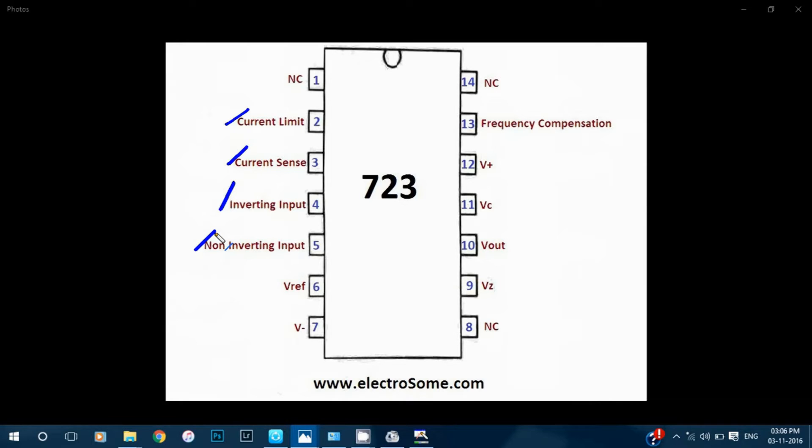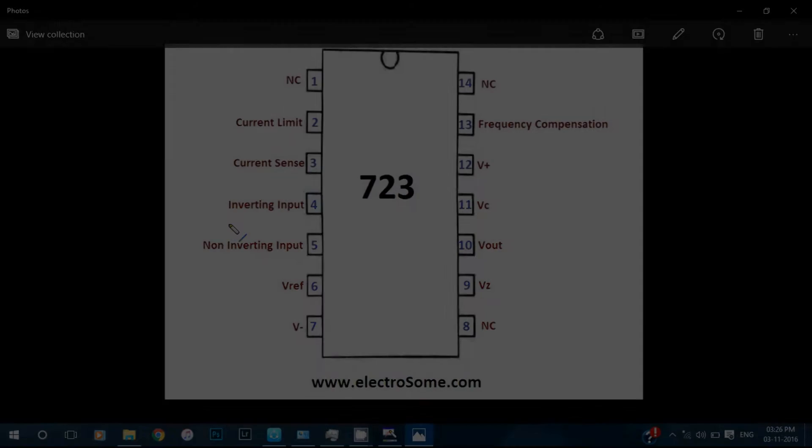The non-inverting input is the fifth pin. This is the non-inverting input of the error amplifier whose output is connected to the series pass transistor. We usually give reference voltage or a portion of it to the non-inverting input.